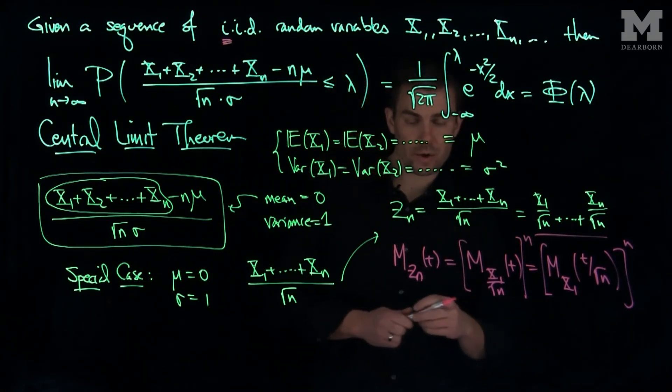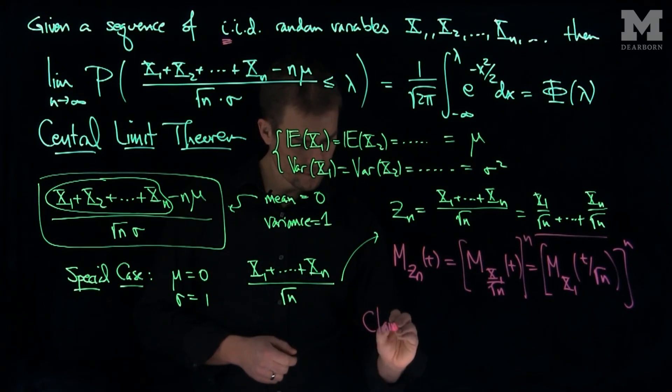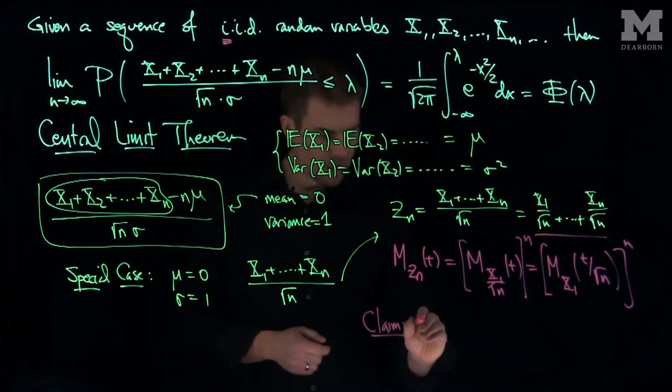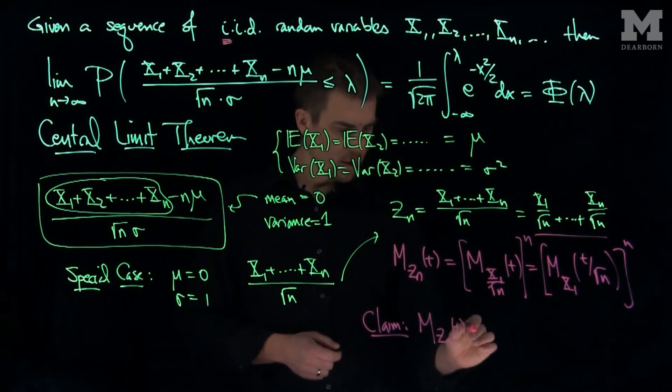And so what we'd like to show is we'd like to show the moment generating function. So now the claim is that the moment generating function of zn of t converges to.